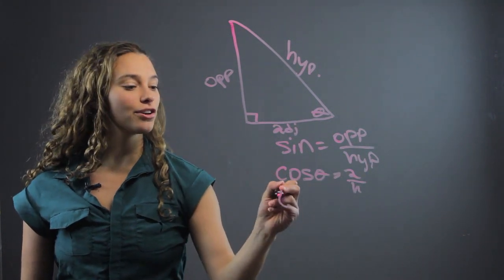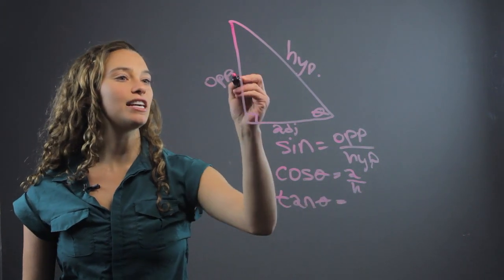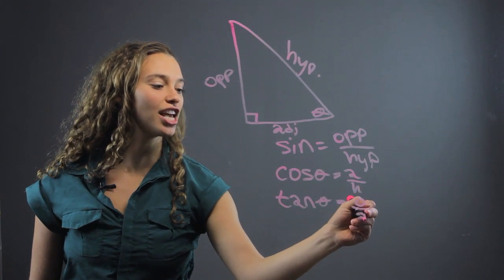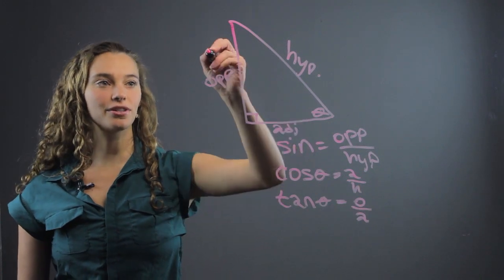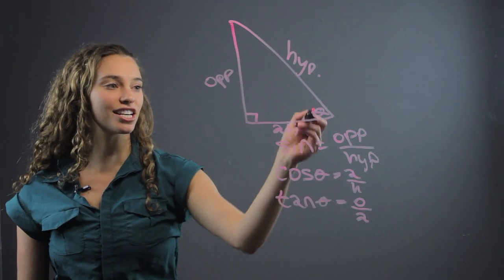Now there's also the tangent of theta and that is going to be the opposite, o, over the adjacent. So you take this side and you divide it by this side and that will give you the tangent of theta.